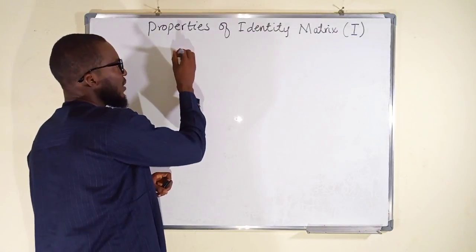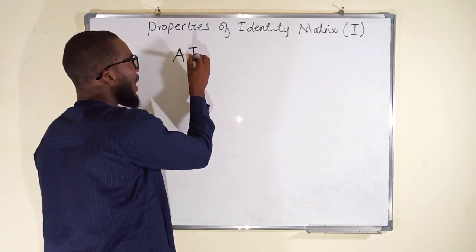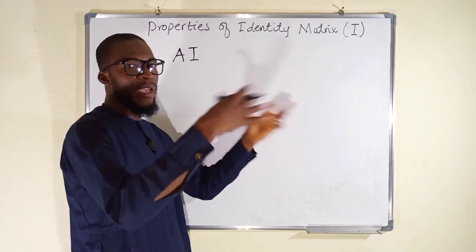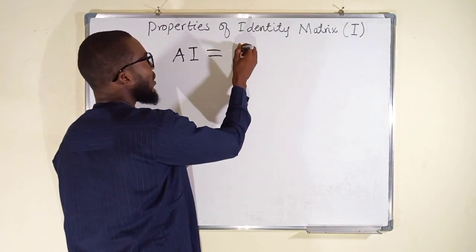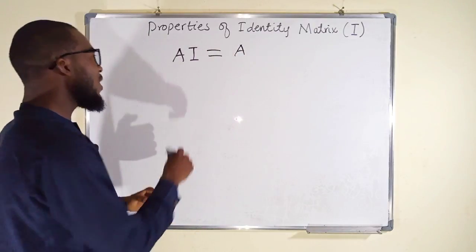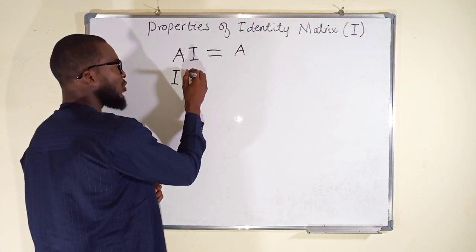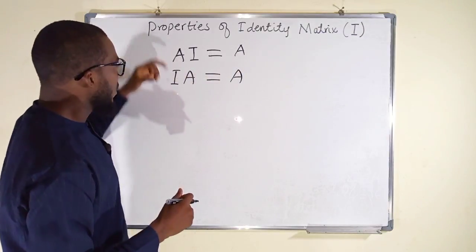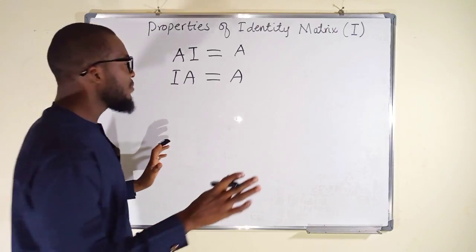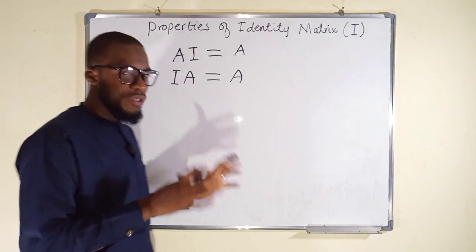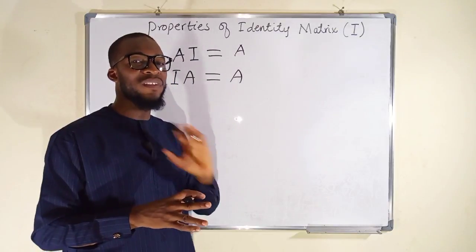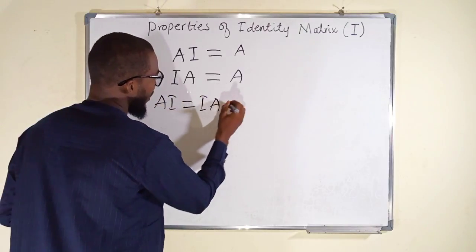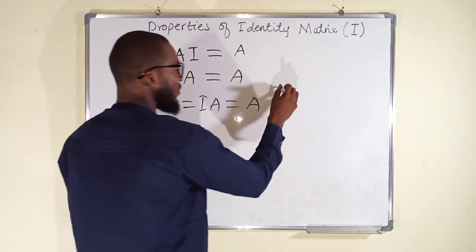First, we have a matrix A which is pre-multiplied by an identity matrix. An identity matrix is that type of matrix in which the leading diagonals are equal to one and all other elements remain zero. This will not change matrix A — it will remain the same. Whether post-multiplication, an identity matrix multiplying A will result in the same matrix A. Note that A·I is not always equal to I·A; this can only be equal under the condition that they are all of the same dimension. A·I = I·A = A if and only if they are of the same dimensions.